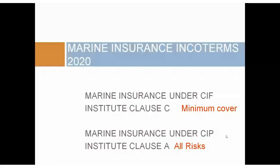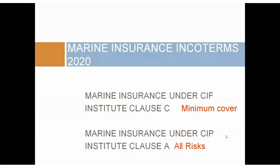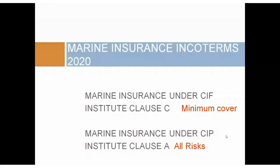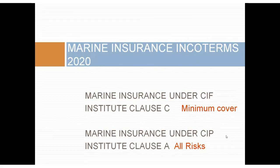We're going to talk about marine insurance, because remember I said it had changed. Under CIF it remains the same — Clause C. So marine insurance under CIF: minimum cover, Clause C. But here's the new one: marine insurance under CIP is all risks — Clause A. CIF and CIP in 2010 were the same — both Clause C minimum insurance. So this is brand new, and this could catch somebody out. Under 2020, CIF and CIP have their own different cover, whereas before they were both minimum cover.